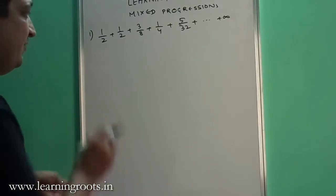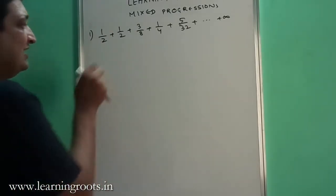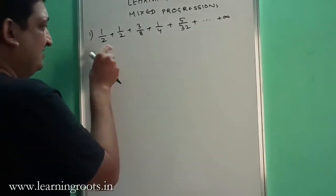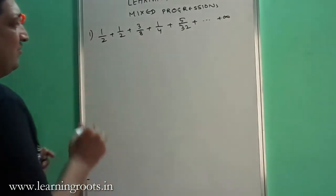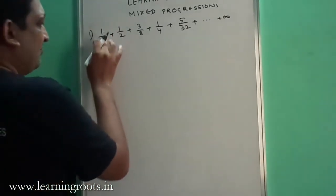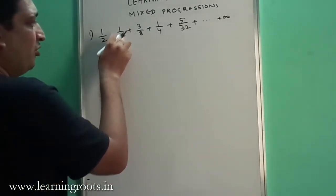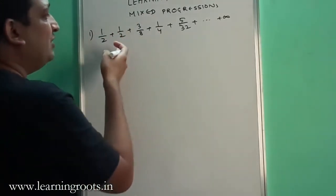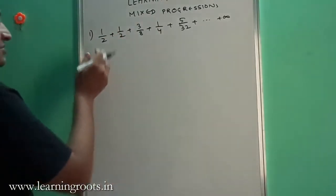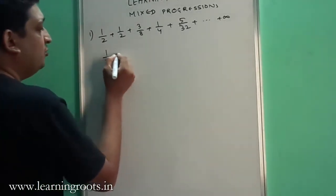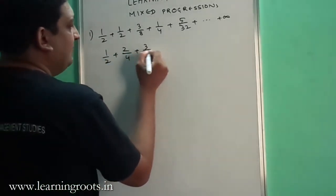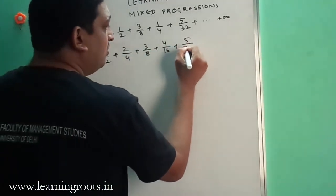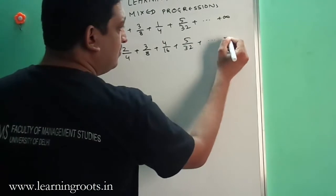If you see it carefully, you can see the denominator is 2, then 8, then 32 and so on. We can work around a bit and see that if it is 1/2 then this has to be 2; if this has to be 16 then this has to be 4, because it is 1/4 and 1/2 respectively. So you can simply rewrite this as 1/2 plus 2/4 plus 3/8 plus 4/16 plus 5/32 and so on to positive infinity.